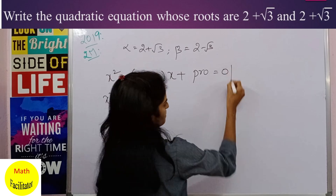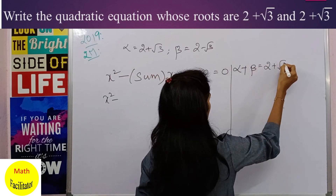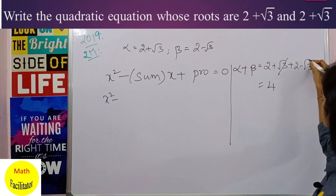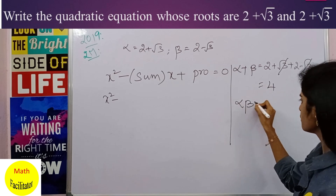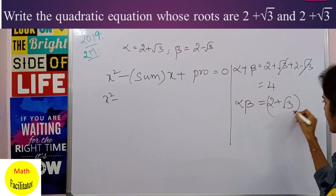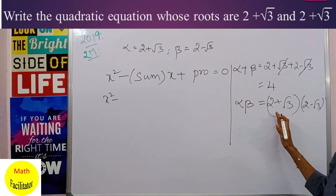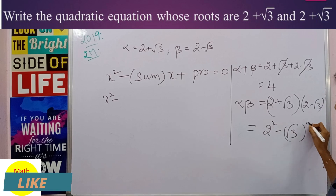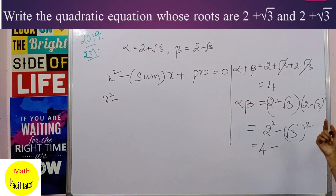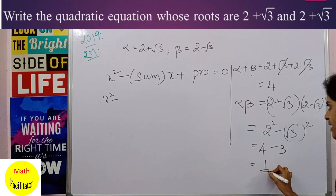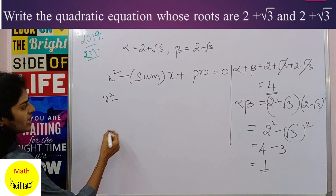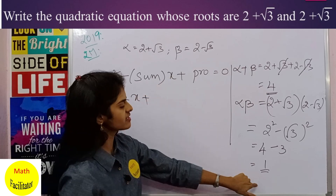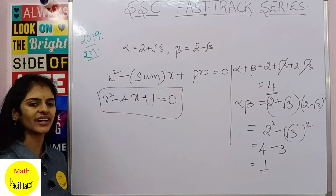α + β = (2 + √3) + (2 - √3) = 4. The product α·β = (2 + √3)(2 - √3), which is in the form (a + b)(a - b) = a² - b², so it equals 2² - (√3)² = 4 - 3 = 1. Substituting: x² - 4x + 1 = 0. This is the required quadratic equation.